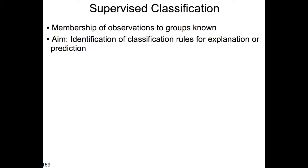Both supervised and unsupervised classification are special cases of supervised and unsupervised learning. Supervised learning in a general sense aims at inferring a function to predict given values of one or more response variables. For example, if you know which email is spam and you have many terms in these emails, you may try to predict spam emails. In ecology or environmental science, we want to identify classification rules and may use them for explanation or prediction.